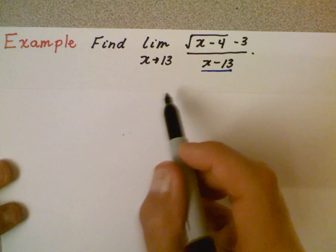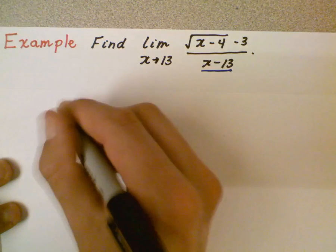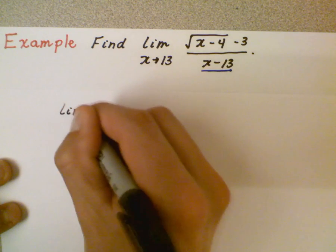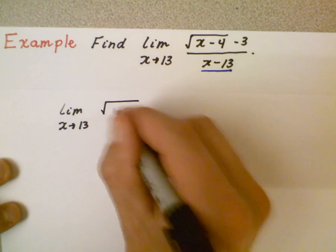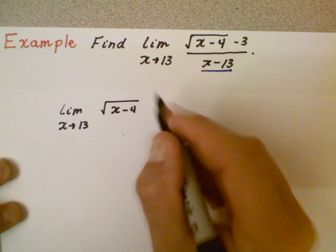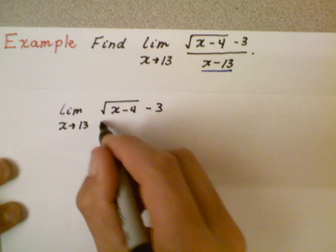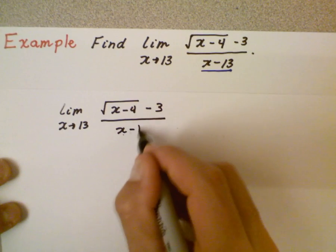We're going to do this algebraically. So I'm going to go ahead and just rewrite the limit problem. So I have the limit as x is approaching 13 of the square root of x minus 4 minus 3 all over x minus 13.